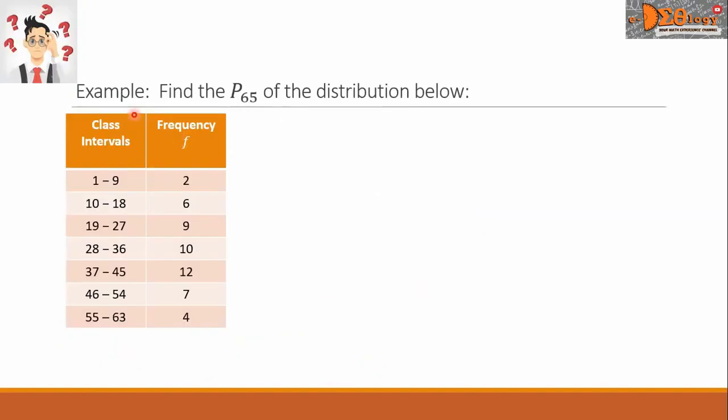Let us see this example. Find the 65th percentile of the distribution below. We have here two columns. The first column for the class intervals where there are seven classes. For the frequency, the numbers are here respectively.